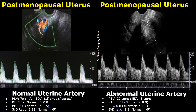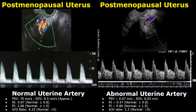This case shows an abnormal uterine artery spectral Doppler waveform in a postmenopausal patient. The resistive index is 0.61, which is abnormal because it is less than 0.8. The pulsatility index is less than 1.5, so that is abnormal, and the SD ratio is also less than normal at 2.8 — so these values are abnormal. Here is another case showing abnormal uterine artery spectral Doppler values, where the resistive index, pulsatility index, and SD ratio are all abnormal.